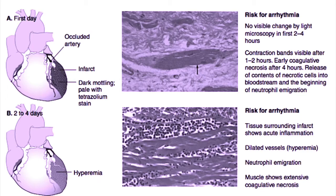At two to four days following MI, there is evidence of hyperemia on gross pathology, and there is still a large risk for arrhythmia, including ventricular tachycardia and ventricular fibrillation. On light micrograph, you can see tissues surrounding the infarct showing acute inflammation, including neutrophils, as well as dilated vessels causing hyperemia with extensive coagulative necrosis.